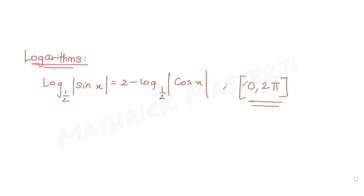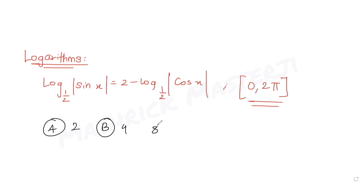So in the interval from 0 to 2π, we need to find how many distinct solutions we can have for this equation. The answer choices given are 2, 4, 8, and 16. Let's solve it and understand.